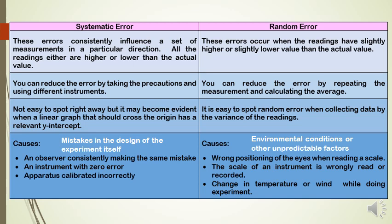Basically, there are two types of experimental errors: systematic error and random error. Systematic errors consistently influence a set of measurements in a particular direction — all readings are either higher than the actual value (positive errors) or lower than the actual value (negative errors). Random errors occur when readings are slightly higher or slightly lower than the actual value, meaning the readings contain either positive or negative errors, or are the same as the actual values.